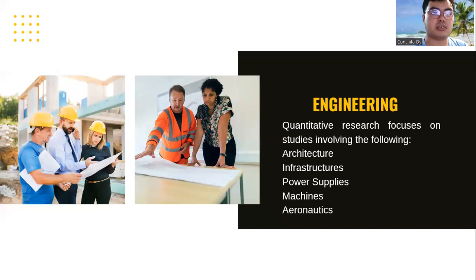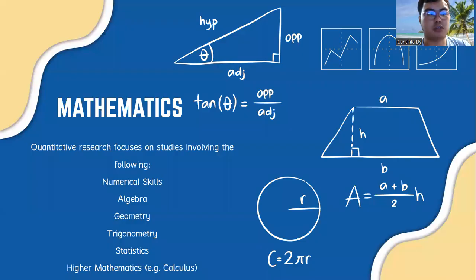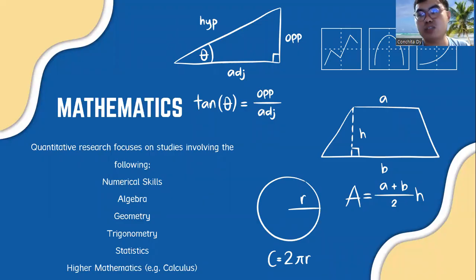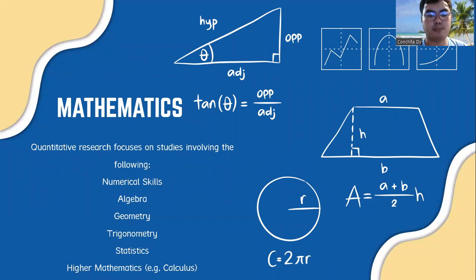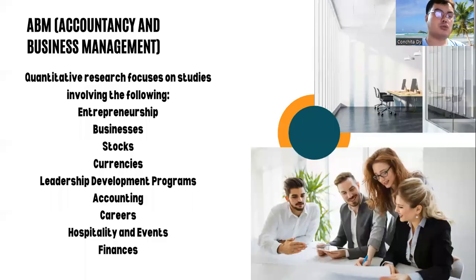In Mathematics — being a math major — research focuses on numerical skills across different mathematical topics such as algebra, geometry, trigonometry, statistics, and higher mathematics. We can conduct descriptive, comparative, experimental, or correlational studies in this field. Usually, research involves the mental abilities, numerical skills, or mathematical literacy skills of students, teachers, and other people.